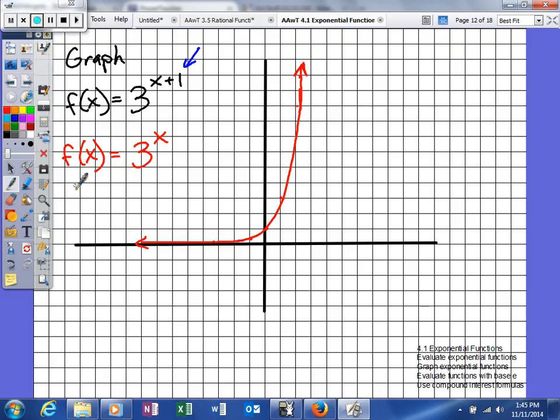So what that's going to do, it's going to move our graph left 1. So we're just going to take all these values and move them left 1. So 0 comma 1 will be negative 1 comma 1. Negative 1 comma 1 third will be negative 2 comma 1 third. This point will be here and this point will be here.